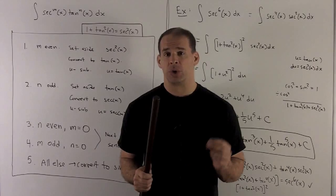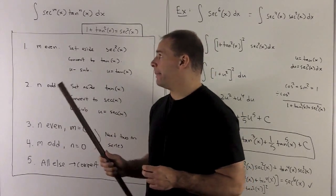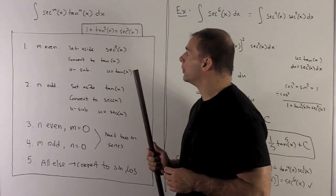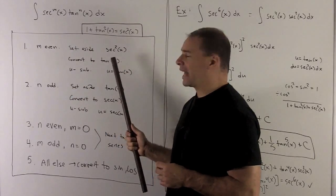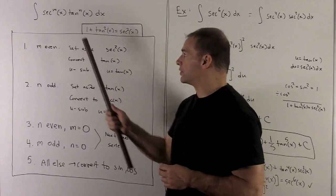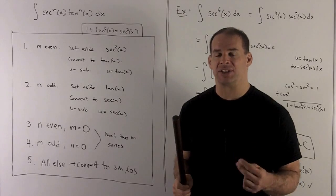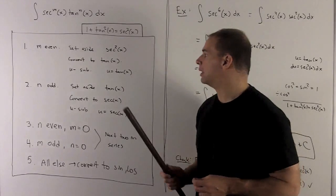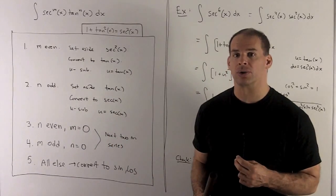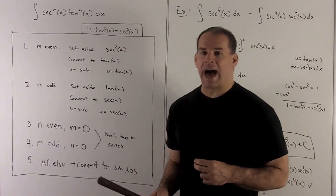We're going to have five cases, two of which I'll do in this part. The first case is m even. If I have m even, I set aside a sec²x. With what's left over, I convert that to tangent using sec²x = 1 + tan²x. If secant starts out even, I take two away; what's left is even, so it can be written as sec² to some other power. Once everything's in tangent, we u-substitute with u = tan x.